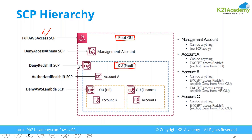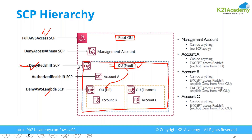So if you deny something at the parent level and allow it at the child level, it won't work. Similarly, if you deny something at a higher SCP and allow it in a lower SCP, the deny takes effect. If something is denied at the parent OU, then it will be denied for all root accounts inside that OU. SCP stands for Service Control Policy.